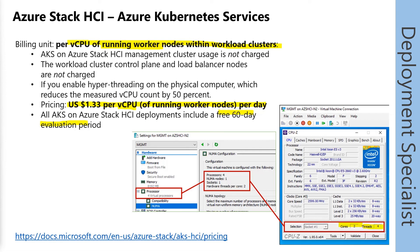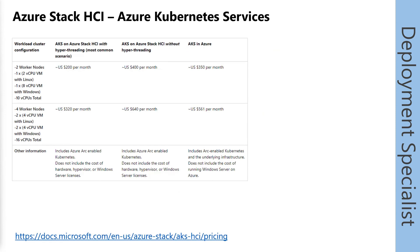In the previous two scenarios — Azure Stack HCI licensing and the licensing of virtual machine workload — we said we are focused on physical cores and didn't have extra costs for hyper-threading, but also couldn't reduce costs with hyper-threading. In Azure Kubernetes Services, we can reduce costs with active hyper-threading by 50% because we are doubling the amount of virtual CPUs we can use. There are examples showing that with active hyper-threading, we have 50% of the costs compared to without active hyper-threading.